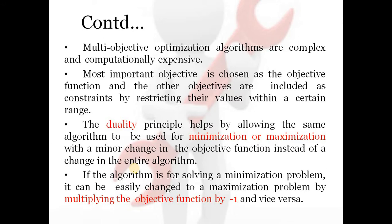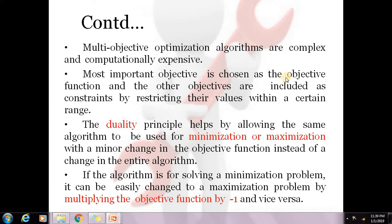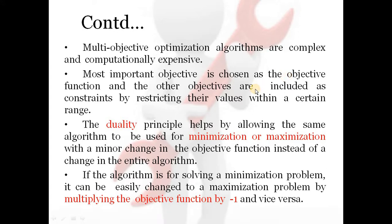Multi-objective problems are more complex. If for any reason an objective cannot be included in the objective function, it can be inserted as a constraint instead. The objective function also follows the principle of duality, meaning the same objective function can be used for minimization or maximization with a minor change — simply multiplying by minus one.